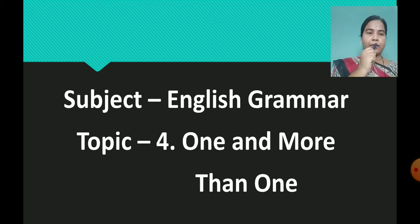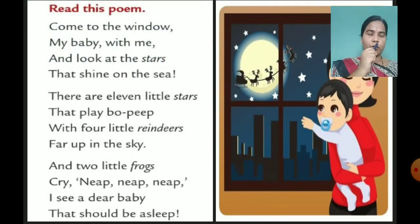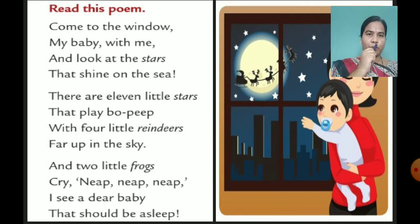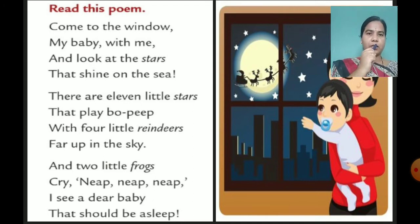We will start with this poem. If you have your textbook, you can see it on page number 24. On this page we can see a beautiful picture and a poem. First of all, we will read this poem: 'Come to the window, my baby, with me, and look at the stars that shine on the sea. There are eleven little stars that play bo-pip with four little reindeers far up in the sky.'